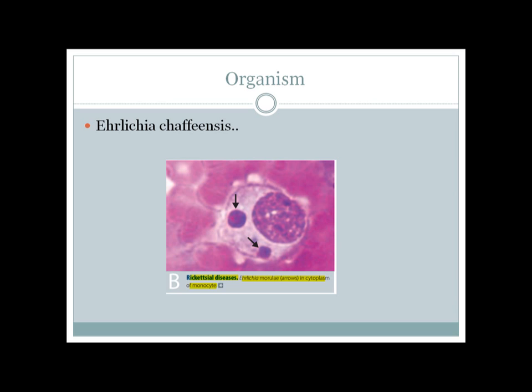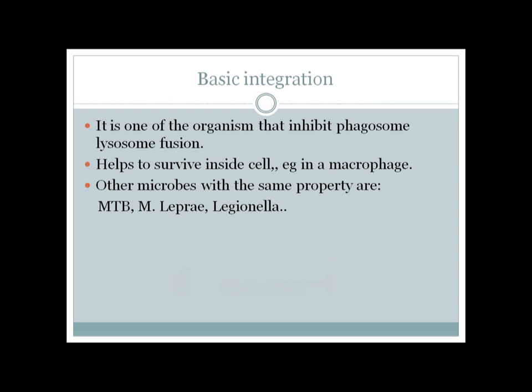One of the most classic organisms that can do this is Mycobacterium tuberculosis. It causes tuberculosis, goes into the alveoli, is taken up by alveolar macrophages, then transported to the lymph node where it multiplies inside the macrophage or monocyte. Another classic organism is Mycobacterium leprae, which also lives inside a cell. Both mycobacteria inhibit the phagosome-lysosome system.